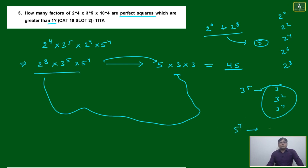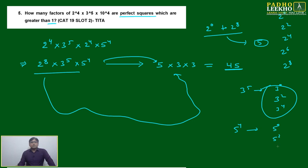Similar way, 5 to the power 4. It will also be again 5 to the power 0, 5 square, 5 to the power 4. You have 3 options, due to which I have written 5 into 3 into 3. 45.